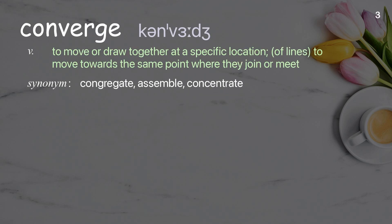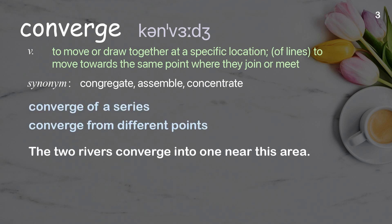Converge: to move or draw together at a specific location; of lines, to move towards the same point where they join or meet. Examples: converge of a series, converge from different points. The two rivers converge into one near this area.